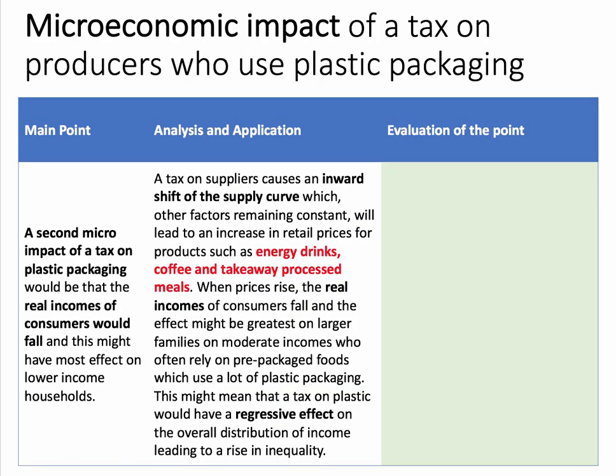The second micro impact — two of my points are micro and one is macro. The second micro impact of a tax on plastic packaging: always go back to the question. Real incomes of consumers would fall, and this might have the biggest effect on lower-income households. The explanation: a tax on suppliers causes an inward shift of the supply curve, which, other factors remaining the same, will lead to an increase in the retail price for products such as energy drinks, coffee, bottled water, and takeaway processed meals. When prices rise, the real incomes of consumers fall, and the effect might be greatest on larger families on moderate incomes who often rely on prepackaged food.